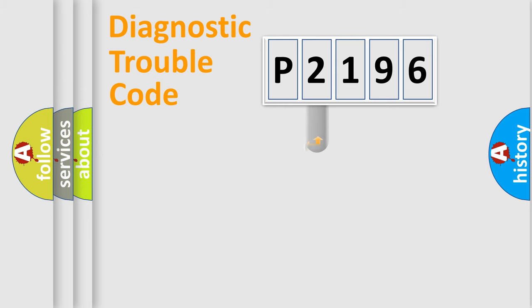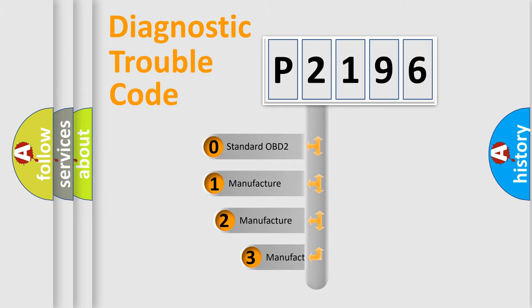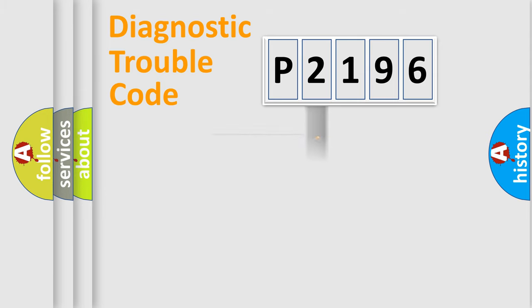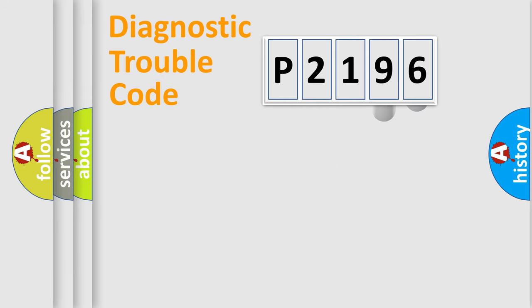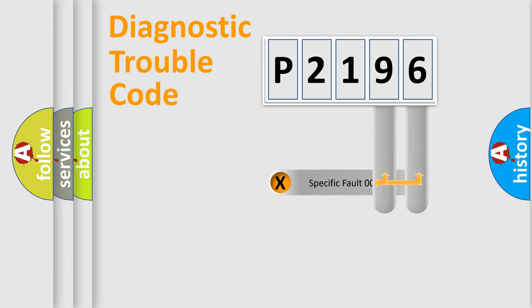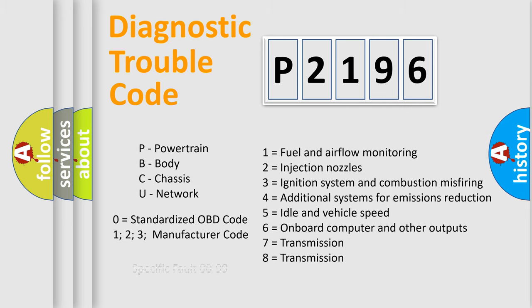This distribution is defined in the first character of the code. If the second character is expressed as zero, it is a standardized error. In the case of numbers 1, 2, or 3, it is a manufacturer-specific expression of a car-specific error. The third character specifies a subset of errors. The distribution shown is valid only for the standardized DTC code. Only the last two characters define the specific fault of the group. This division is valid only if the second character code is expressed by the number zero.